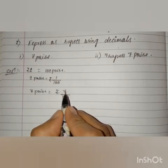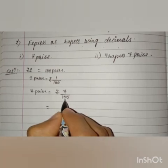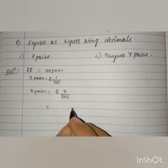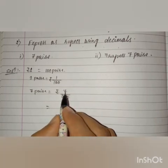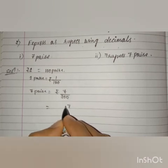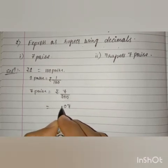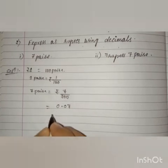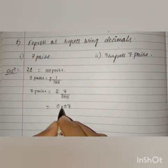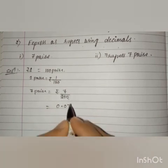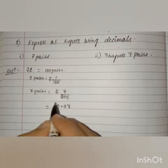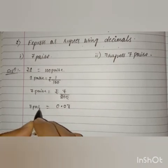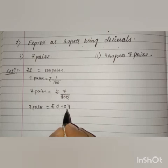The decimal form of 7/100 — here we have denominator 100, so after the decimal point there should be 2 decimal places. We write 7 in the hundredths place, putting a 0 before it. Therefore, 7 paisae equals rupees 0.07.